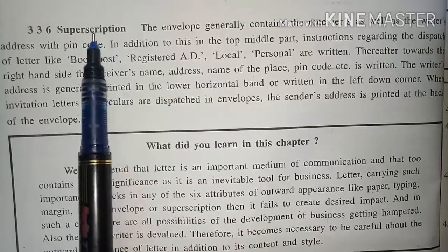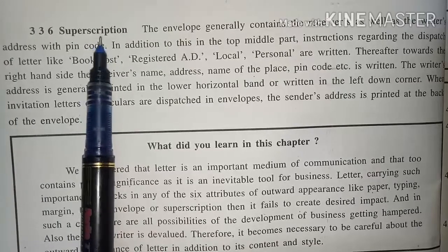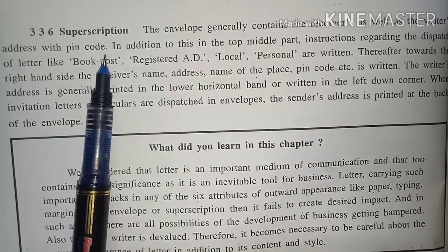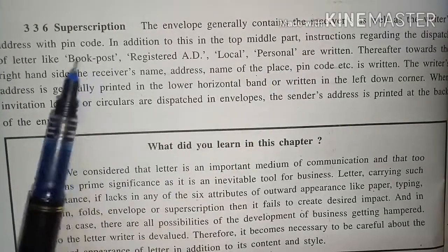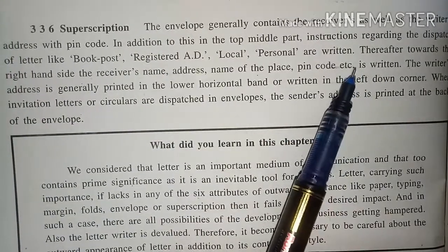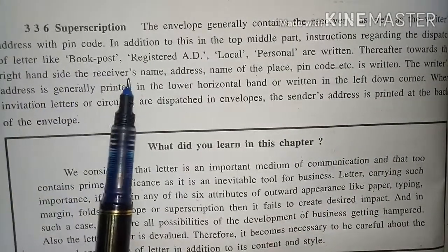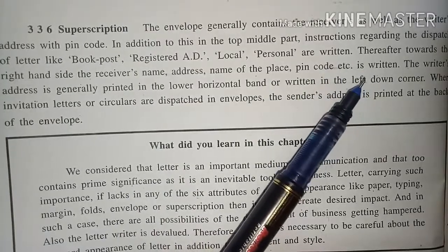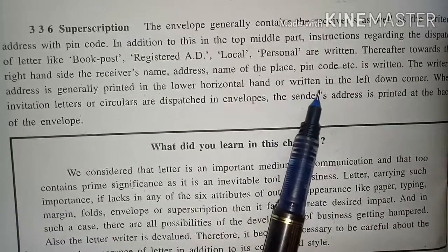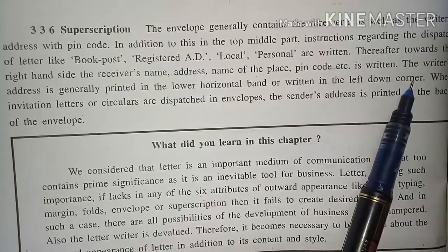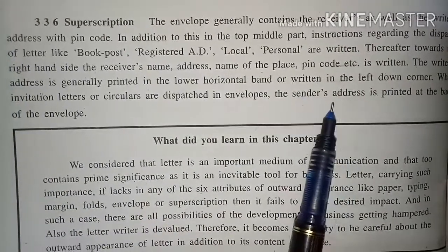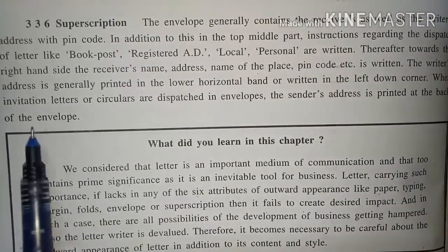Superscription refers to what is written on the envelope. The receiver's as well as the writer's address and pin codes are written. In the top middle part, the method of dispatch — such as book post, registered, local, or personal — is written. Towards the right-hand side, the receiver's name, address, place, and pin code are written. The writer's address is generally printed in the lower horizontal band or written in the lower left corner. When invitation letters or circulars are dispatched, the sender's address is printed at the back of the envelope.